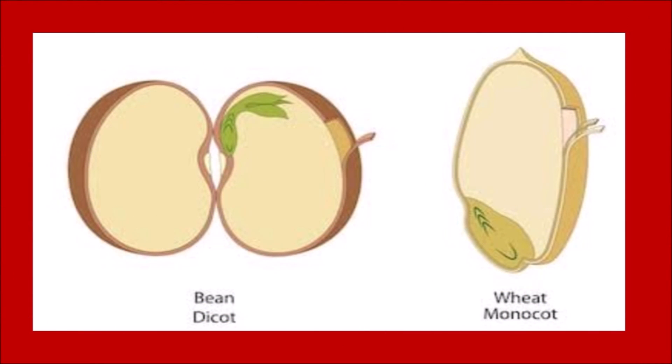Some seeds have two cotyledons — that is why they are called dicots. For example, gram and beans. While some seeds have only one cotyledon and hence they are called monocots. Can you give an example of monocots? Yes, rice and wheat are examples of monocots.